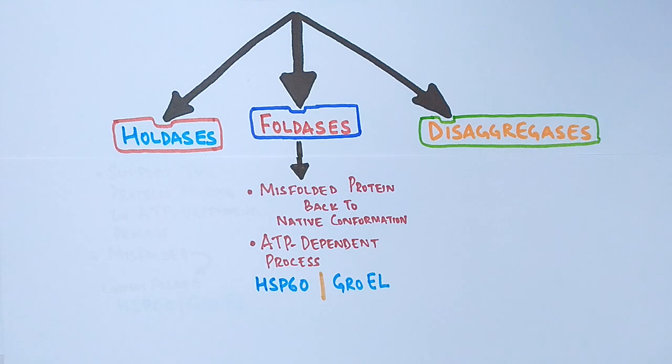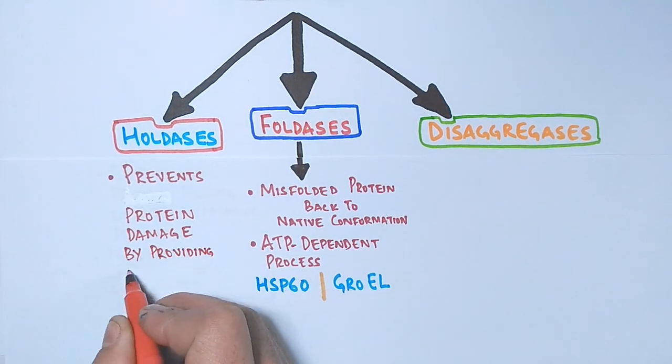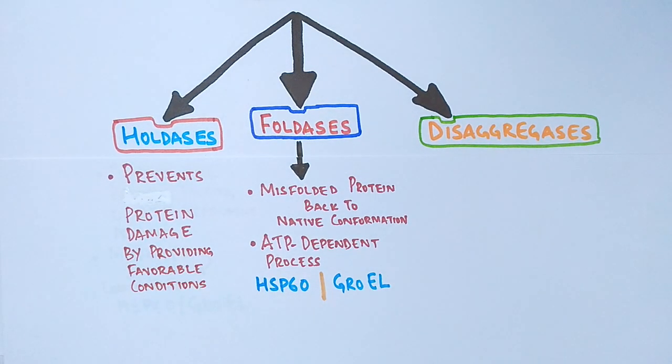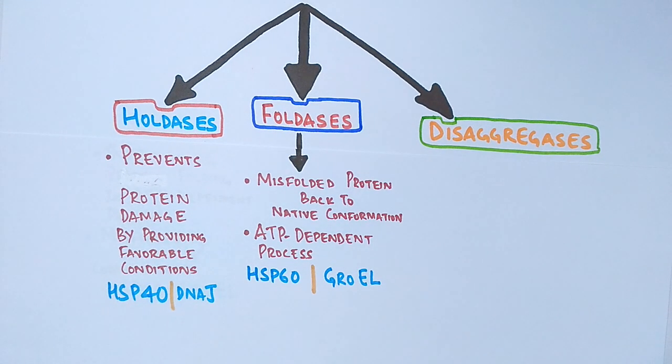Then another class is holdases. It prevents protein damage by providing favorable conditions. Unlike foldases these holdases do not fold the protein or do not correct the misfolded protein but they prevent the protein and by the help of foldases when the favorable conditions arrives again the holdases supply back the protein to the foldases for folding process.